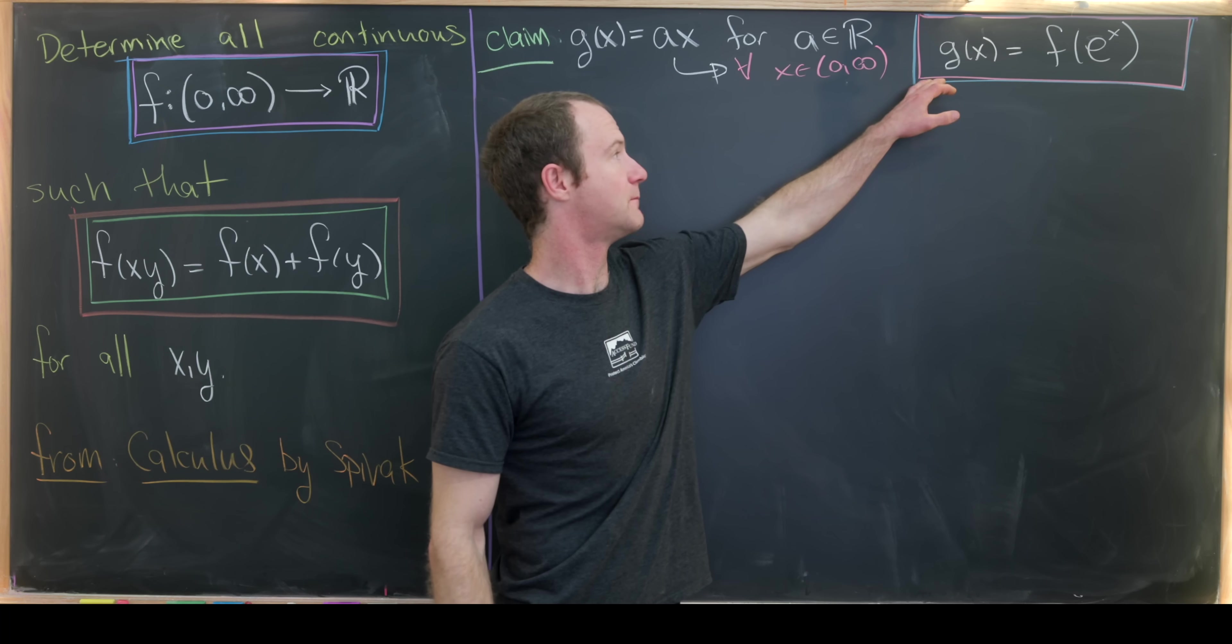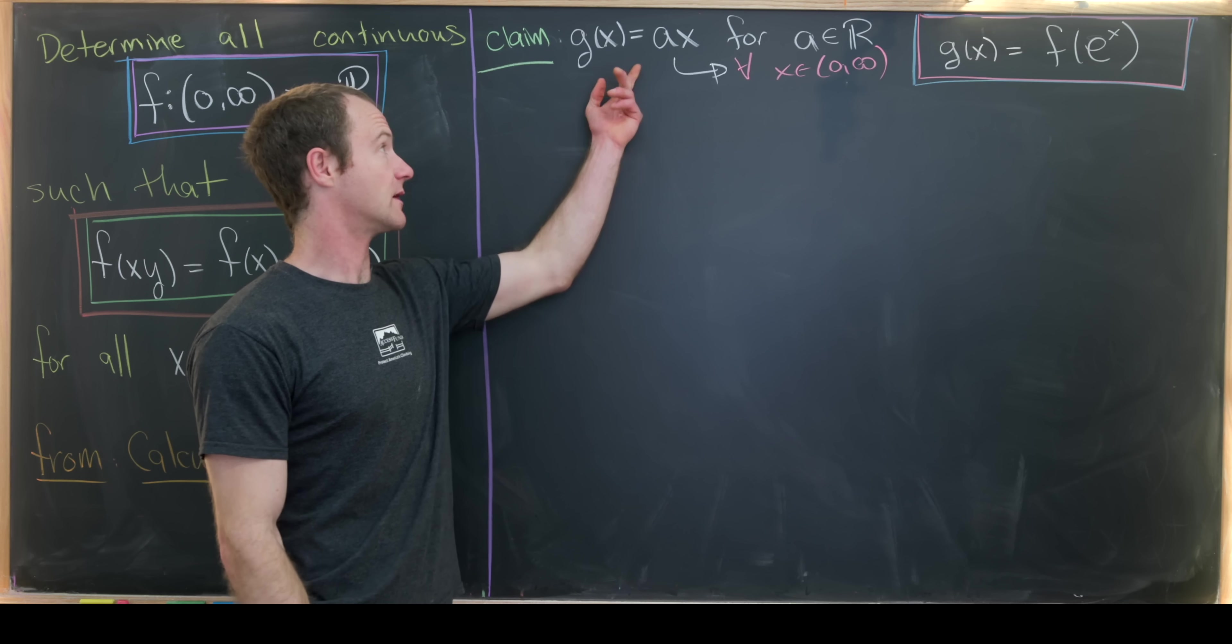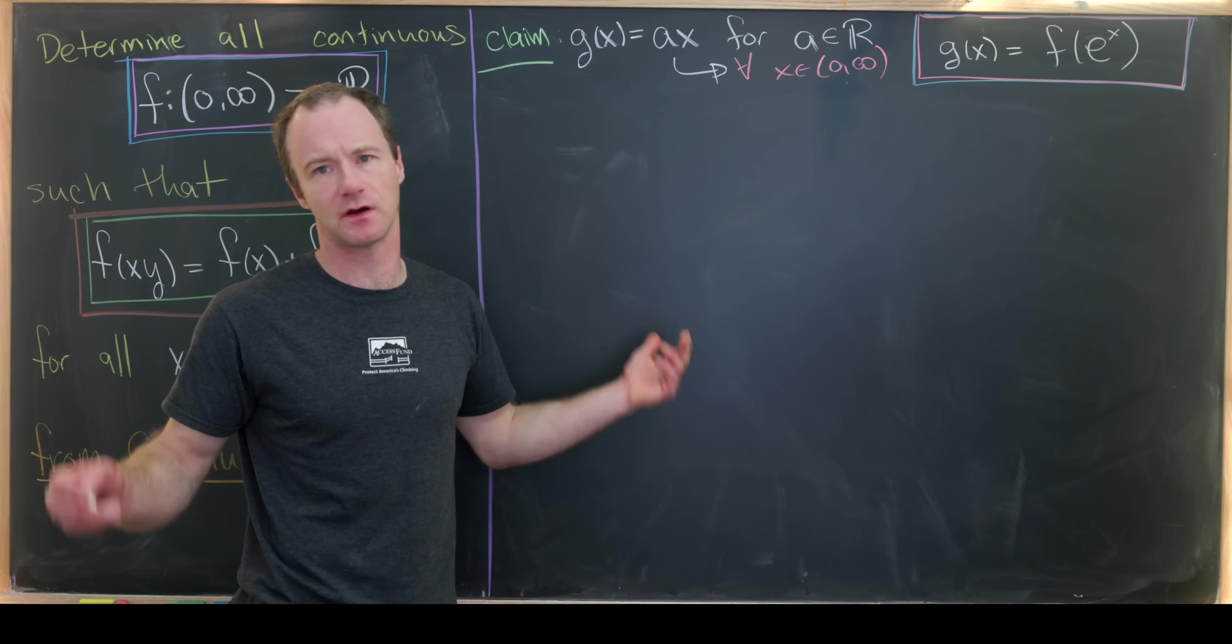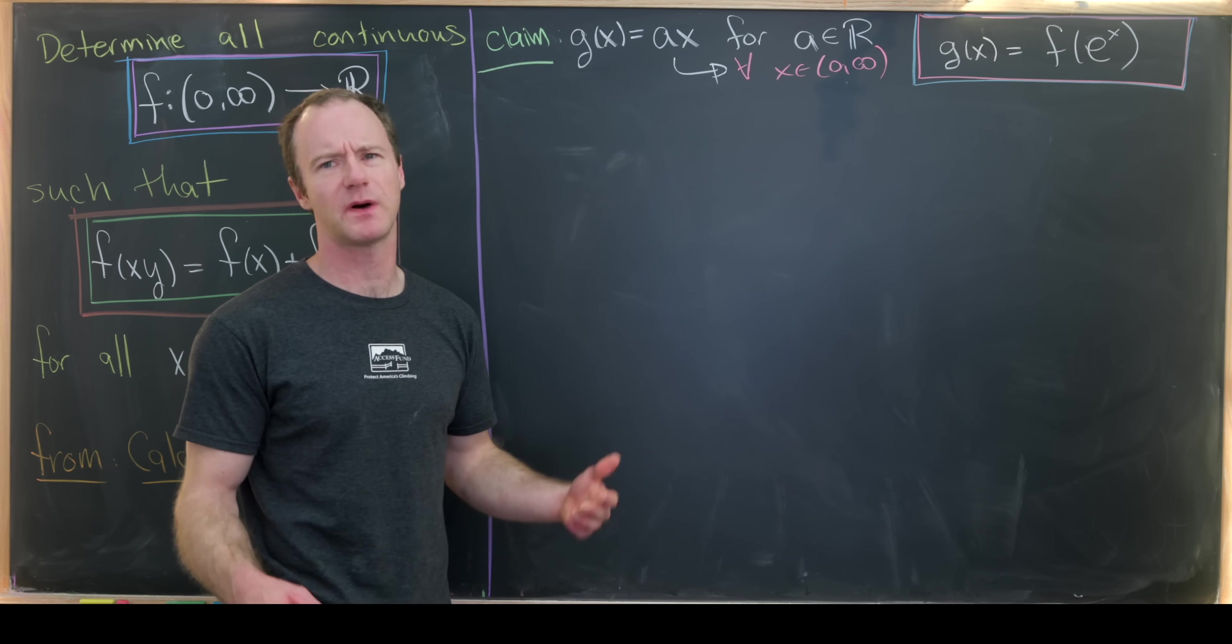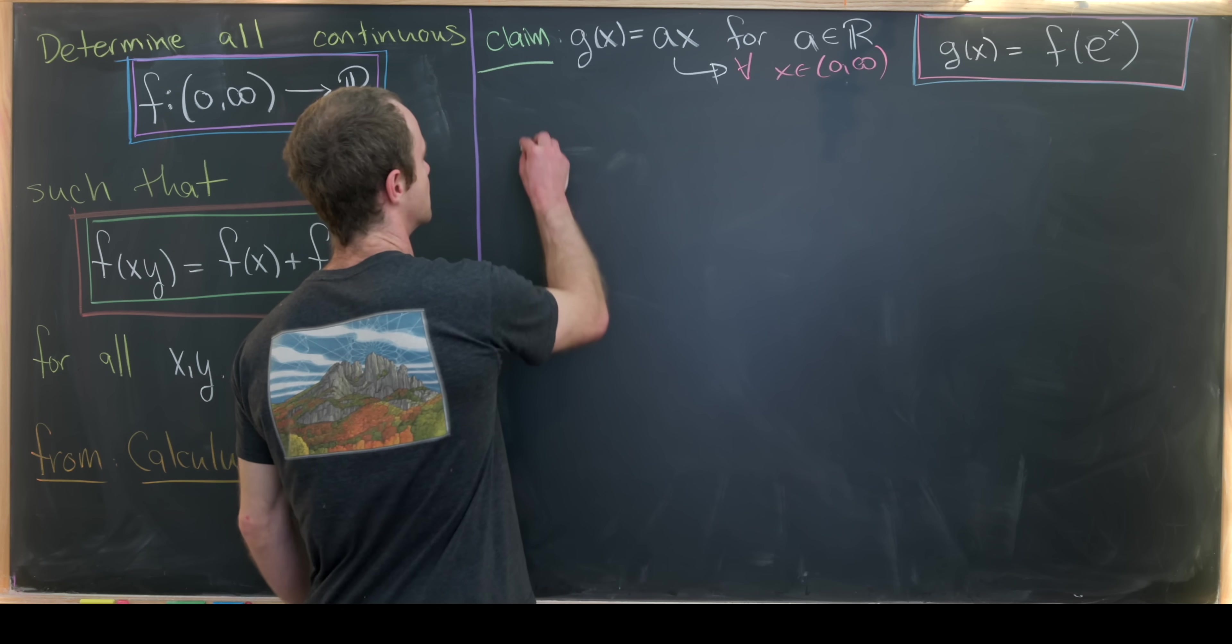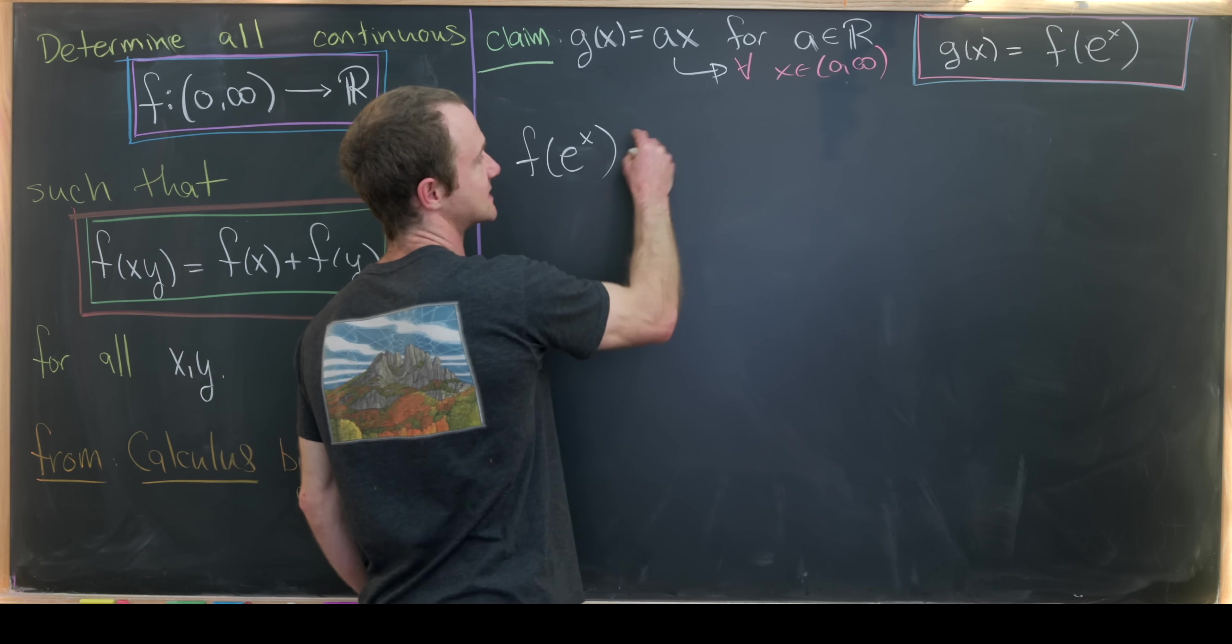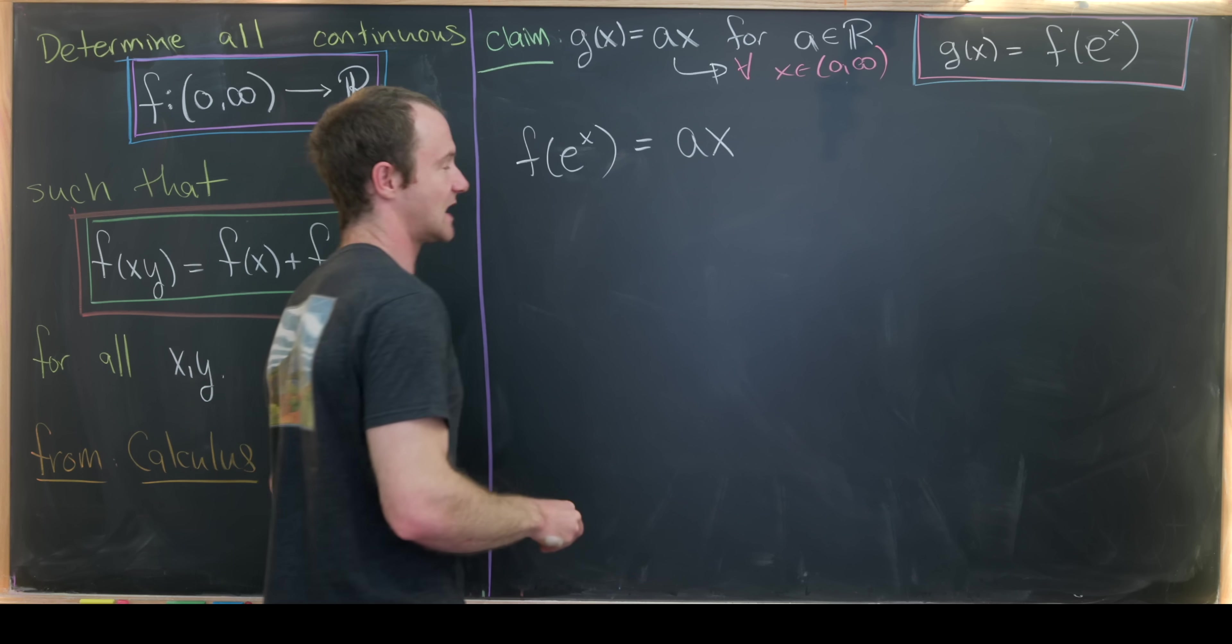We just finished proving that if we compose our exponential function within our goal function, we got a linear function. So g(x) was equal to a times x for some real number a. And this held for all real numbers x or positive real numbers x. So now let's see if we can take this home. So that tells us that f(e^x) is equal to g(x), which is equal to a times x.